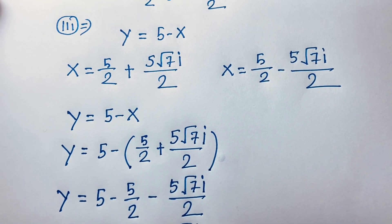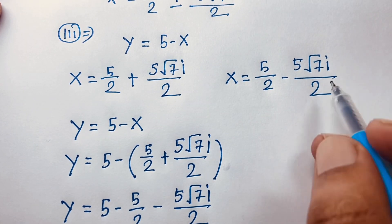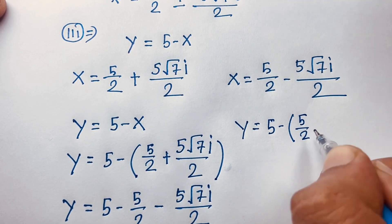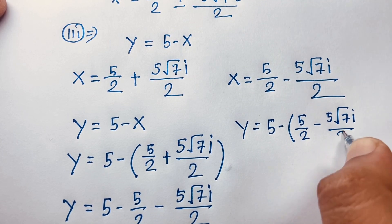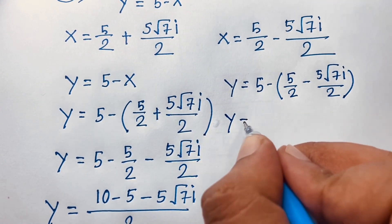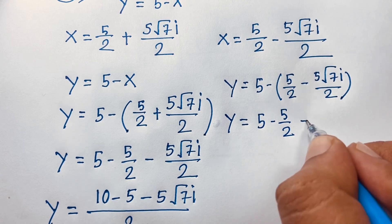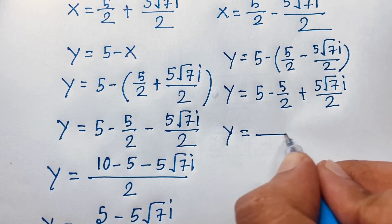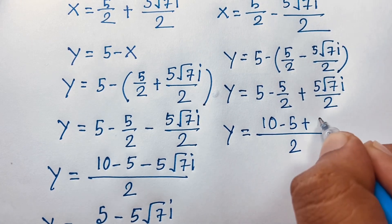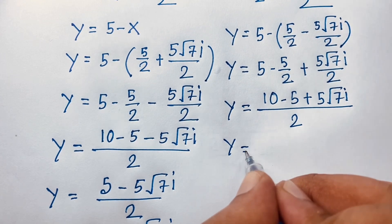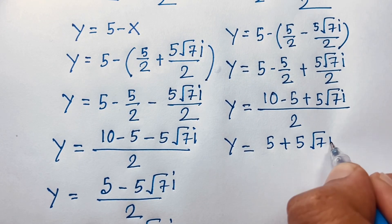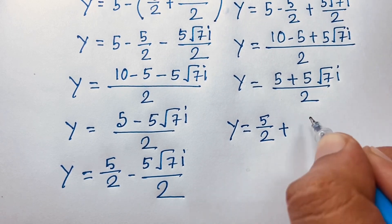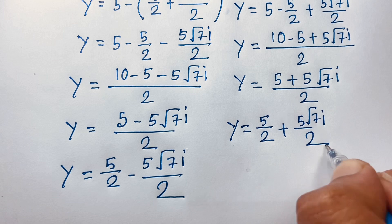When x equals 5/2 minus 5√7 i over 2, then y equals 5 minus (5/2 minus 5√7 i over 2). The negatives cancel: minus minus gives plus. So y equals (10 minus 5 plus 5√7 i) over 2, which gives y equals 5/2 plus 5√7 i over 2. Both solutions are complex — there is no real solution.